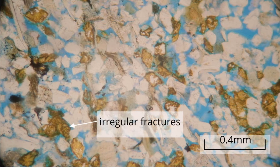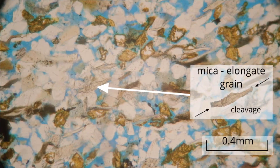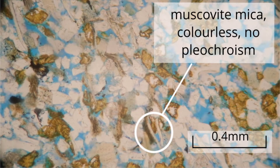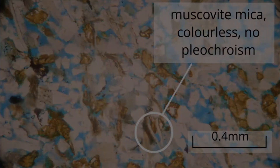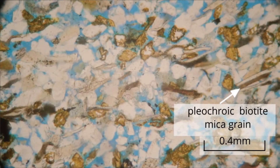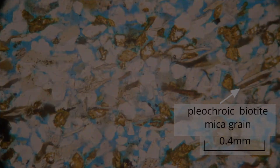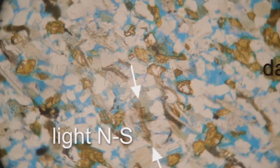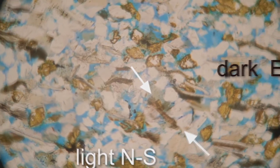Others show irregular fractures. In plain polarised light, the mica grains have moderate relief. They form elongate grains and show strong cleavage parallel to the long grain edges. Muscovite mica is colourless but it is not pleochroic. Biotite is brown to dark brown and it is pleochroic. Note that it has a darker colour when the cleavage is aligned east-west.